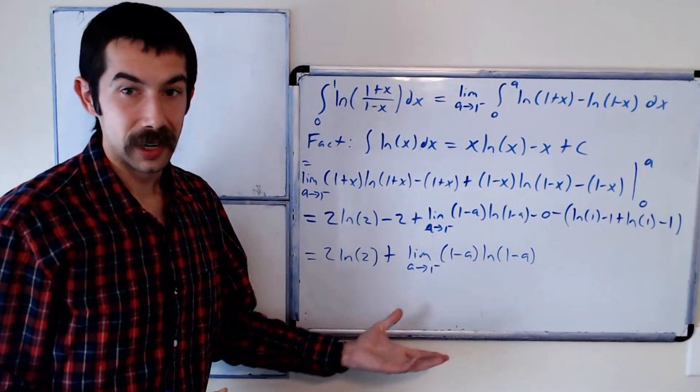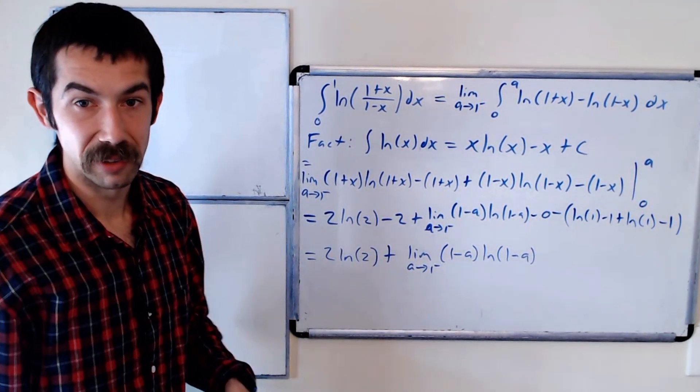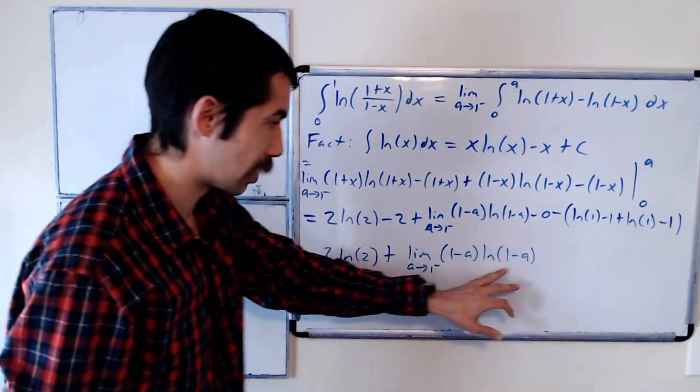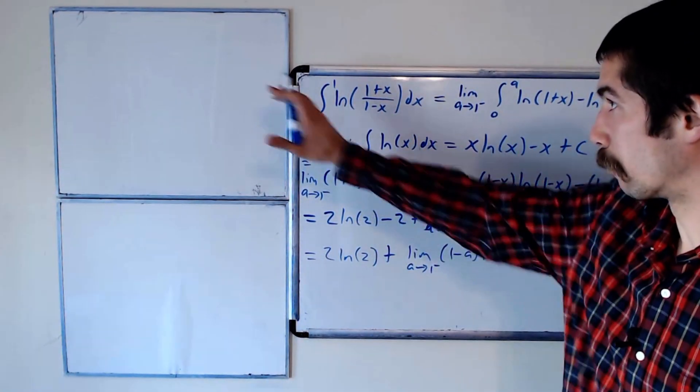So we have to check, does this converge to a value, or does it go off to infinity, or maybe negative infinity? Because it's 0 times negative infinity. And so we can work this over here.